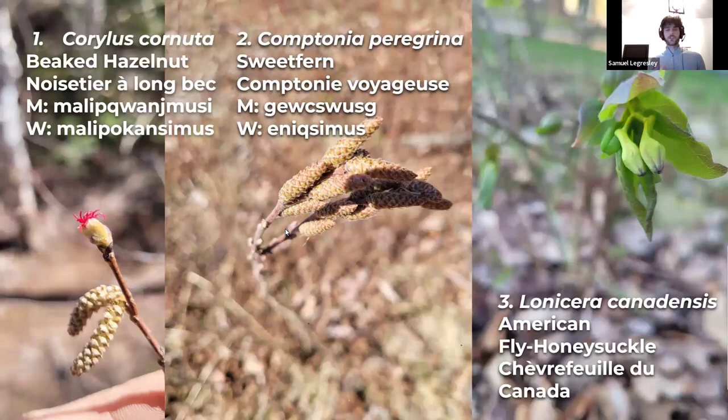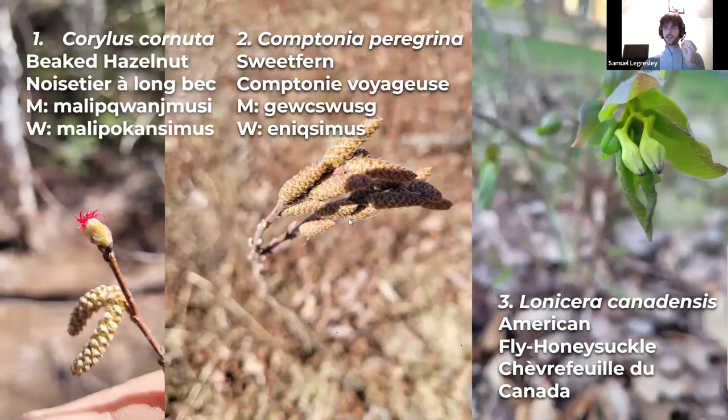This is sweet fern — a plant that makes a bunch of catkins, but it's not actually a member of the birch family. It has male flower catkins and on the female flowers you get spiky nutlets that come out — really cool. Then you get the really distinctive leaves. And then you get the American fly honeysuckle, Lonicera canadensis — this is not the full flower, it's not even bloomed yet. It makes a good-looking red fruit at the end of the summer, though I don't recommend eating it.